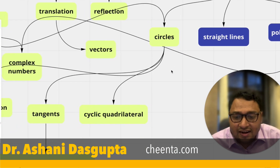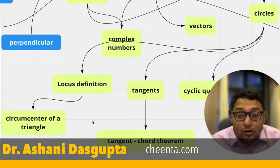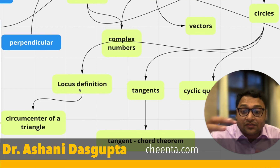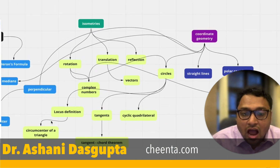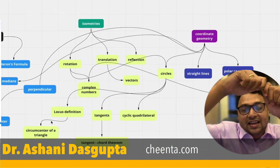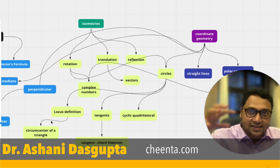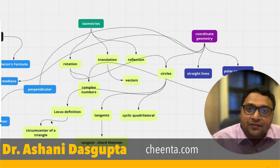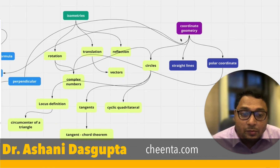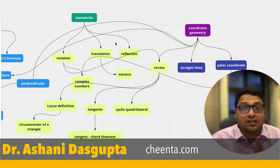Once you learn circles, there are several ways you can go: tangents, cyclic quadrilaterals, the tangent-chord theorem, and locus definitions. From locus definitions, you can talk about the circumcenter of a triangle. So this map tells you how to start with isometries and flow through circles, complex numbers, rotation, reflection, and all of these ideas in a very efficient way. The same goes with coordinate geometry, which is linked with so many other nodes — you can start with coordinate geometry and branch into many of them.